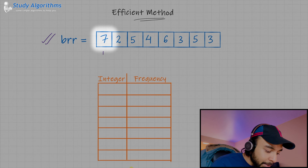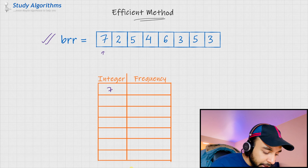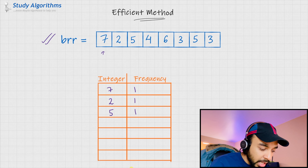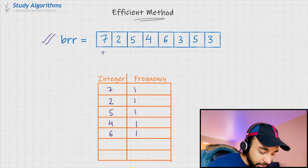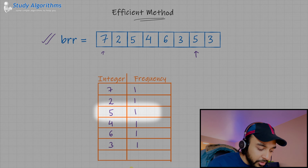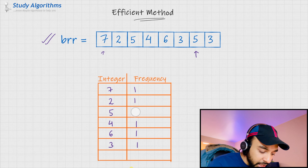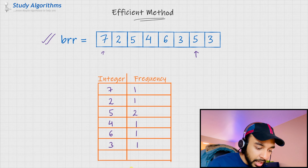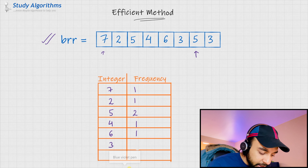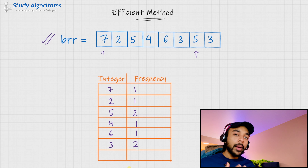I get the element 7 and put it in my map with frequency 1. Next, I get element 2 with frequency 1. Then I get 5 with frequency 1, 4 with frequency 1, 6 with frequency 1, and 3 with frequency 1. Going ahead, I see element 5 again — I already have 5 in my map, so I update the frequency and change it to 2. Then I come across 3 again. Since 3 is available in the map, I update its frequency and change it to 2. So now our map has been updated.